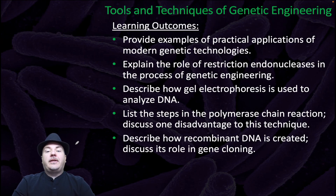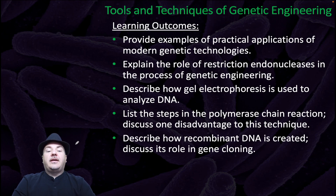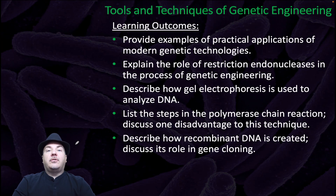By the end of this video, you should be able to provide examples of practical applications of modern genetic technologies, explain the role of restriction endonucleases in the process of genetic engineering, describe how gel electrophoresis is used to analyze DNA, list the steps in the polymerase chain reaction and discuss one disadvantage to this technique, and describe how recombinant DNA is created and discuss its role in gene cloning.